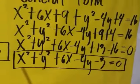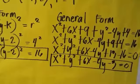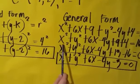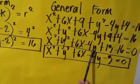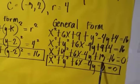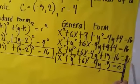And now, we will transfer this 16 to the left side. And it will become x squared plus y squared plus 6x minus 4y plus 13 minus 16 equals 0.